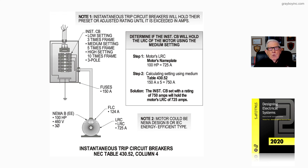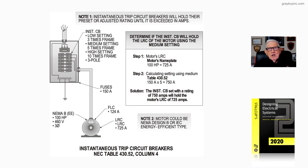If you didn't want to use 1700 percent under Exception 430.52(C)(3), you could use a solid-state starter to reduce the starting current, or an adjustable speed drive in many cases. By adjusting the starting current with those methods, these percentages and settings can be lower. That's what we're illustrating here along with the text in chapter 18 of the electrical design book.